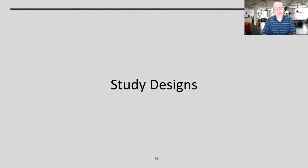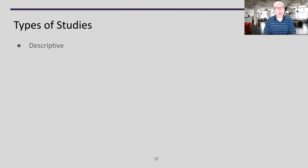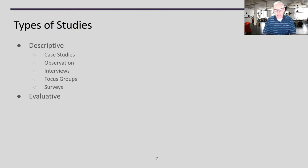Now let me walk through some specific types of study designs. We have two different types: descriptive studies, where we don't try to make a change but simply describe what's going on — often through case study, observation, interview, or focus groups — and evaluative studies, where we try to draw stronger conclusions. Evaluative studies can be experimental or quasi-experimental, and I'll talk in a moment about the difference between those two.